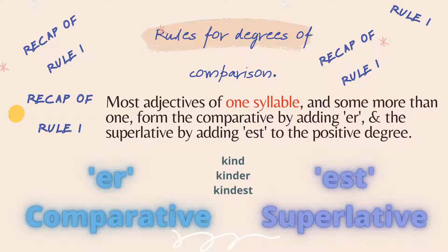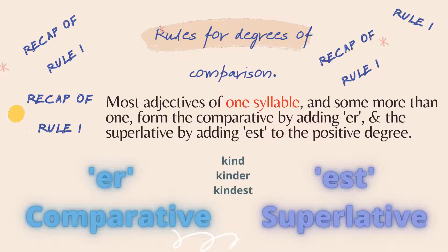A quick recap of Rule 1. Rule 1 is for one-syllable words like 'kind' or 'smart', which make a single sound when pronounced. For those words, you should add 'er' for comparative and 'est' for superlative — as in kind, kinder, and kindest.